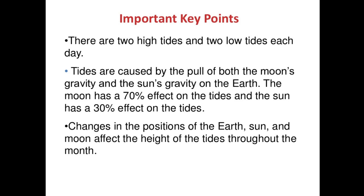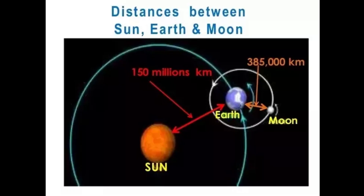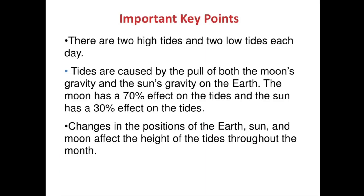Changes in position of the earth, sun, and moon affect the height of the tides throughout the month. The moon is much smaller than the sun, but the reason why the moon has such a greater effect on our tides is because of its distance from the earth. The moon is way closer to us than the sun is, so the moon has a greater gravitational pull on our planet as well as our tides.